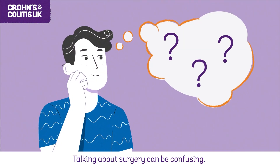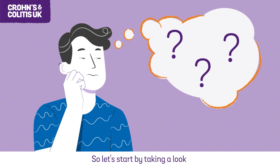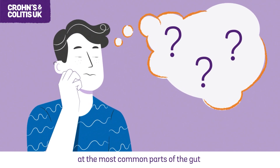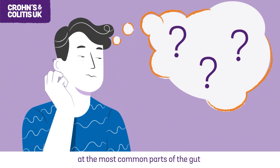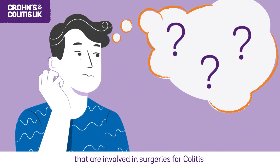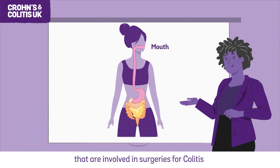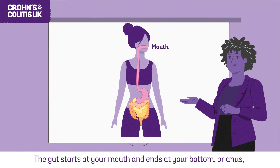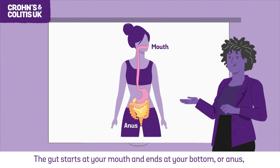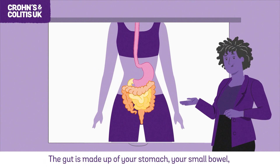Talking about surgery can be confusing, so let's start by taking a look at the most common parts of the gut that are involved in surgeries for colitis. The gut starts at your mouth and ends at your bottom, or anus, where poo passes out of your body.